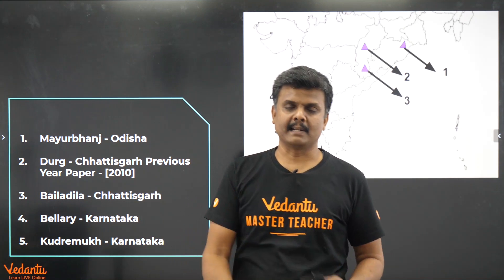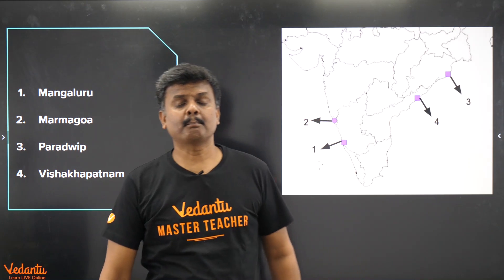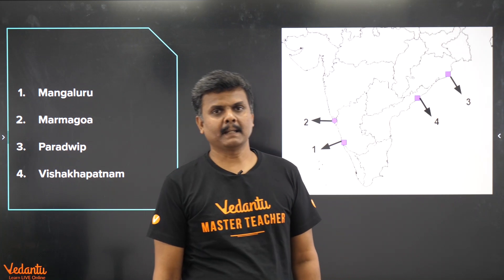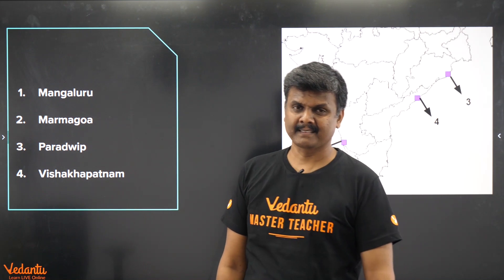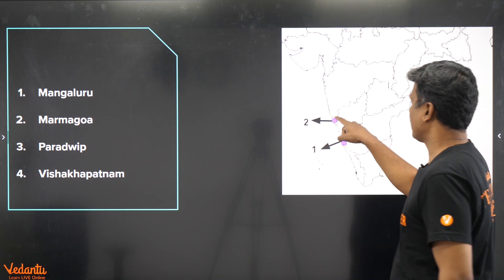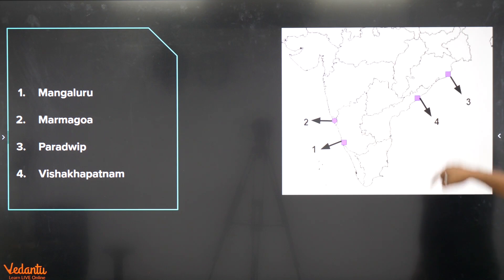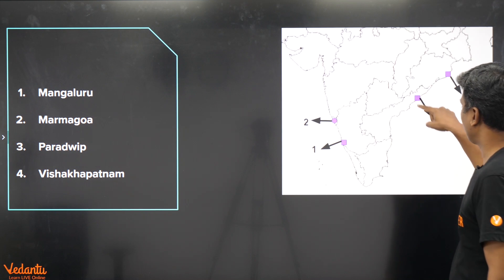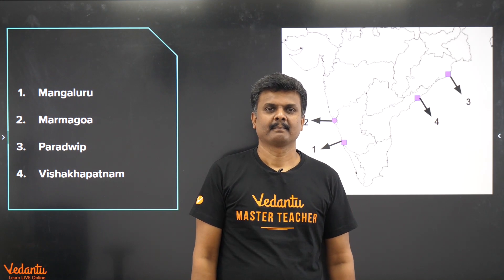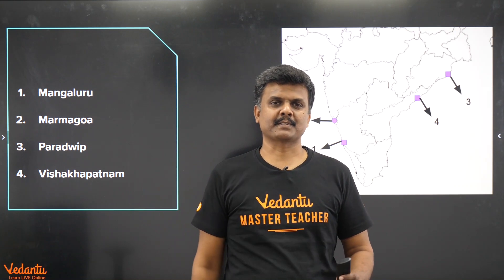Now these are the four export points for iron ore. Number one: Mangalore in Karnataka. Number two: Marmagao. Number three: Paradip. And number four: Visakhapatnam in Andhra Pradesh. So now you know very clearly what the iron ore export points are.